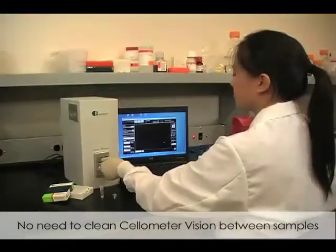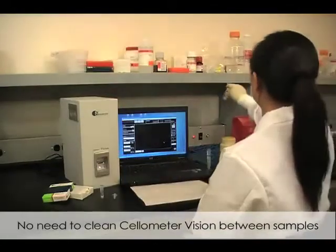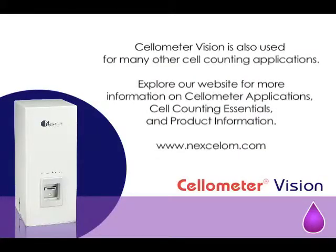The all-plastic counting chamber is easily disposable after use. Cellometer Vision is also used for many other applications, ranging from UV to visible to IR. The optical module can be switched by the user within a few minutes. Explore our website for more information on Cellometer applications, cell counting essentials, and product information.